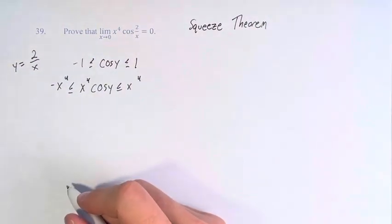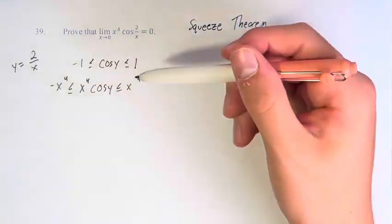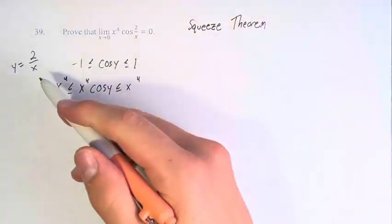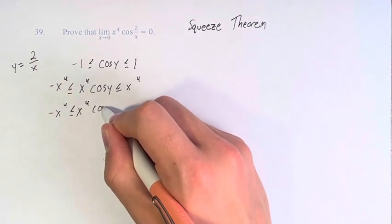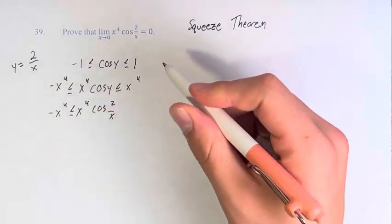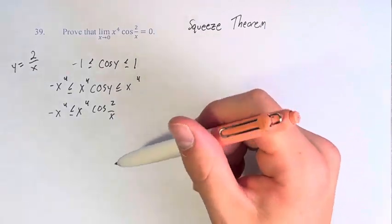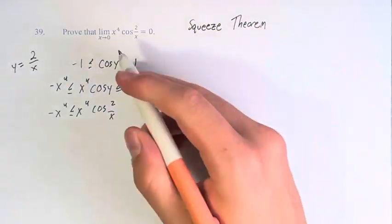We can rewrite this with cosine of 2 over x. I just wanted to demonstrate that what's inside the cosine doesn't matter—it's just that we're taking the cosine of different values.